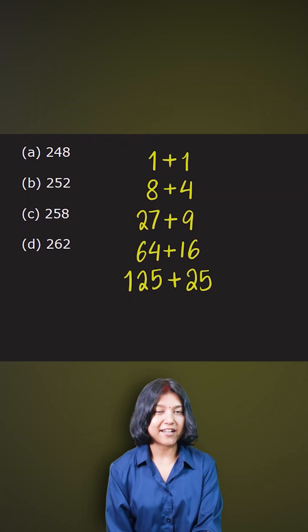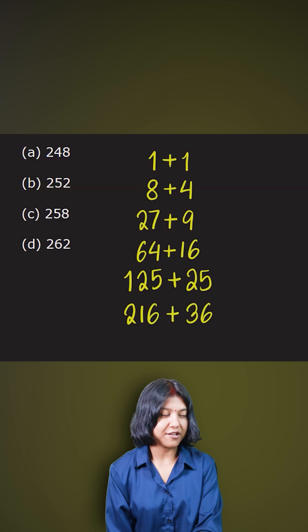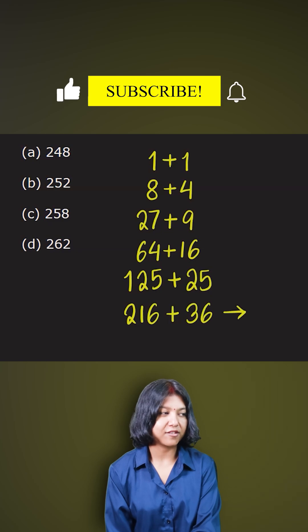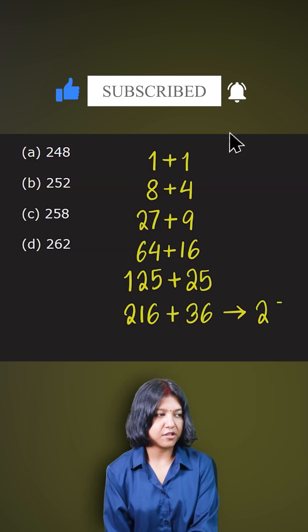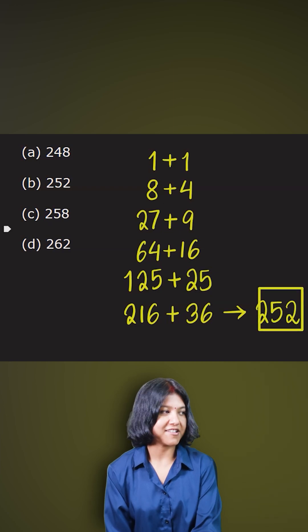Logically the next number has to be the cube of 6 added to the square of 6 which is 216, which is the cube of 6 added to 36. When I do that, 216 plus 36 is 252. This number is in my option and hence that is our answer 252.